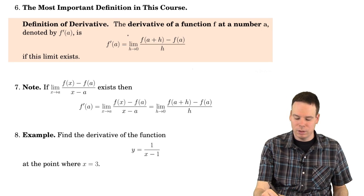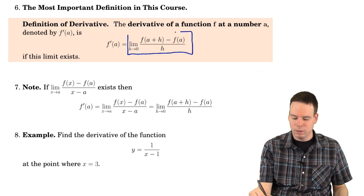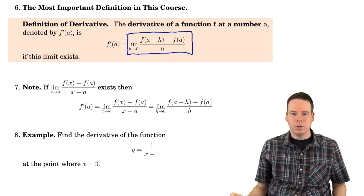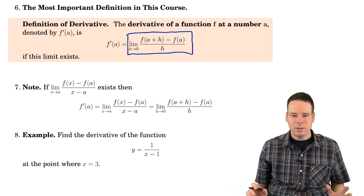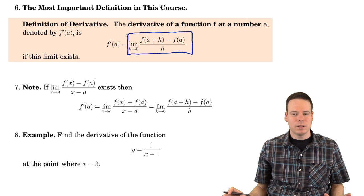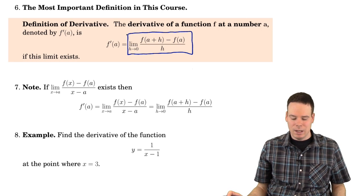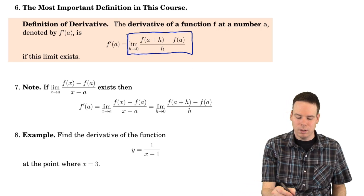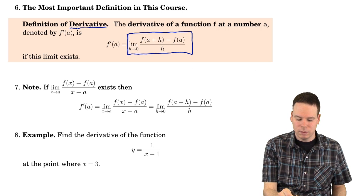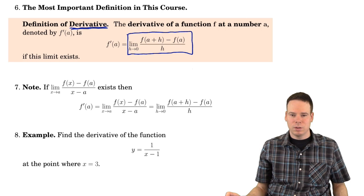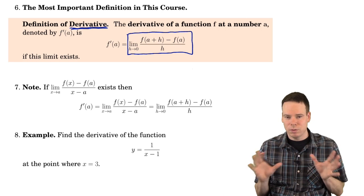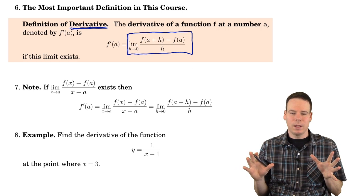In working out the slope of the tangent line to a curve, we had to work out the value of this limit. That was defined to be the slope of the tangent line. This is such an important limit in calculus that we give it a name. It's what we call the derivative. So this is the most important definition in this course. This course is centered around the idea of a derivative and its applications.